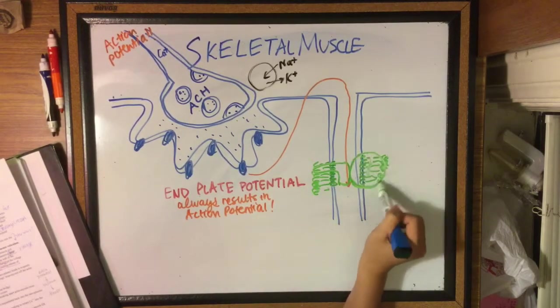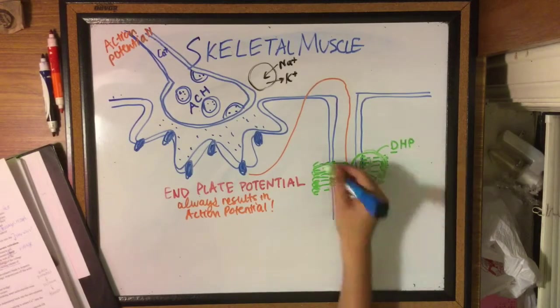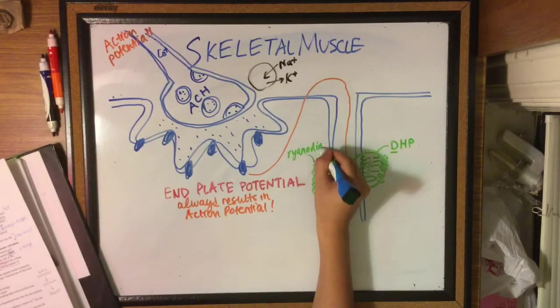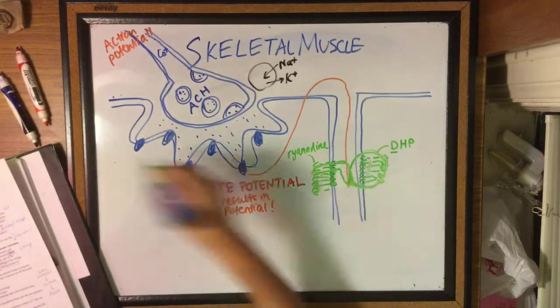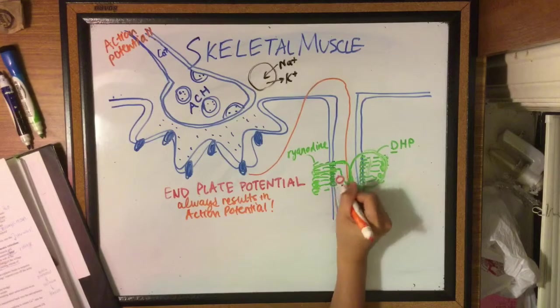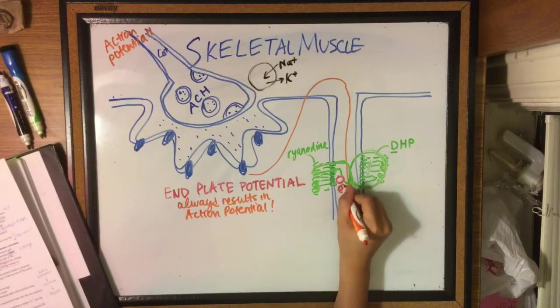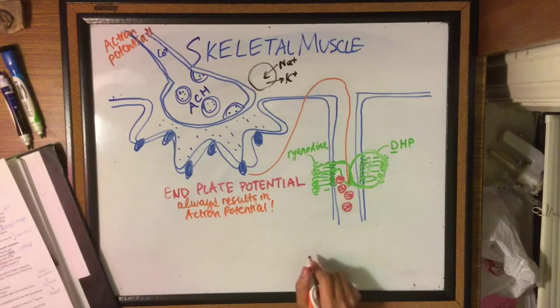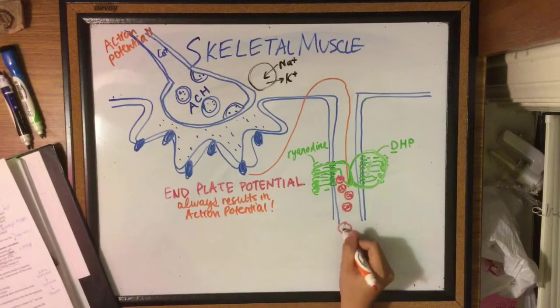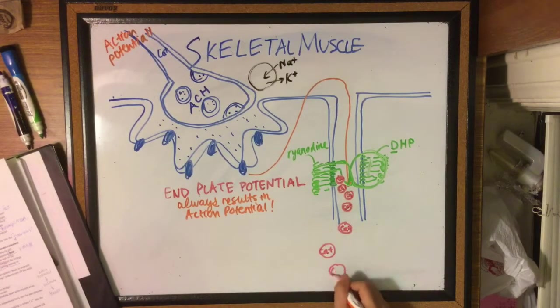The action potential activates voltage-sensitive DHP receptors which are connected to the ryanodine receptors, and so the DHP receptors go through a conformational change which in turn opens up the ryanodine channel, which releases calcium from the intracellular sarcoplasmic reticulum into the cytoplasm.